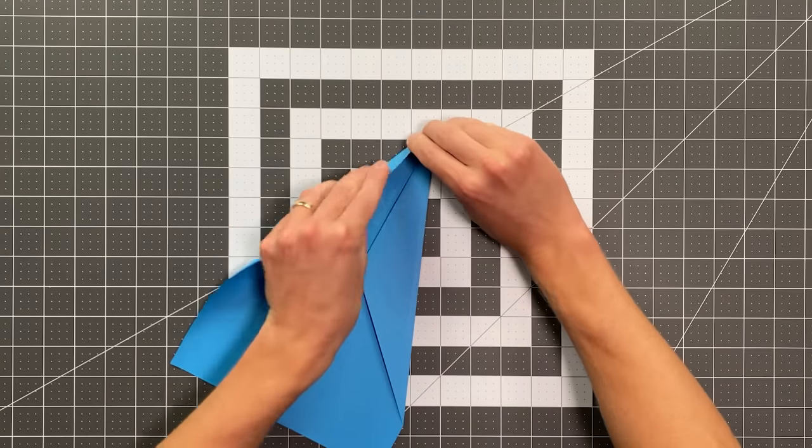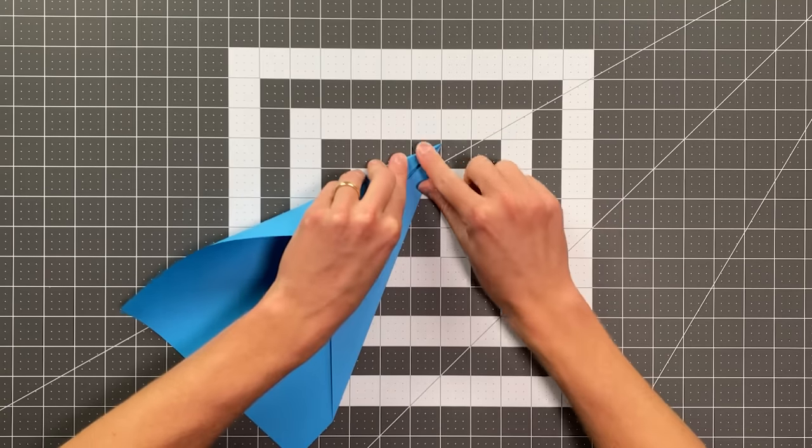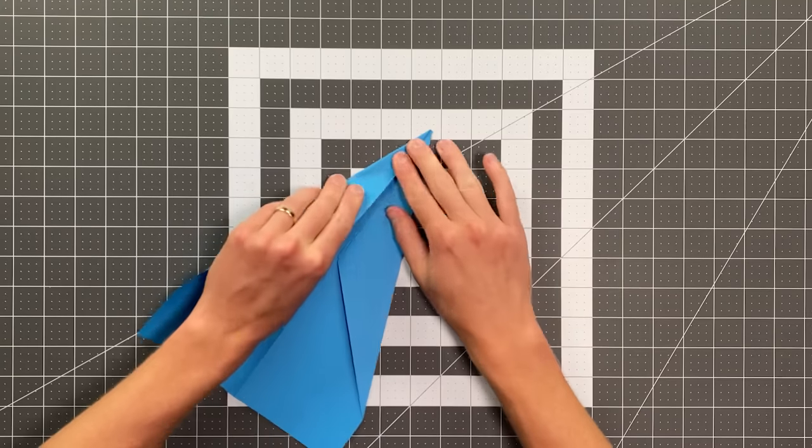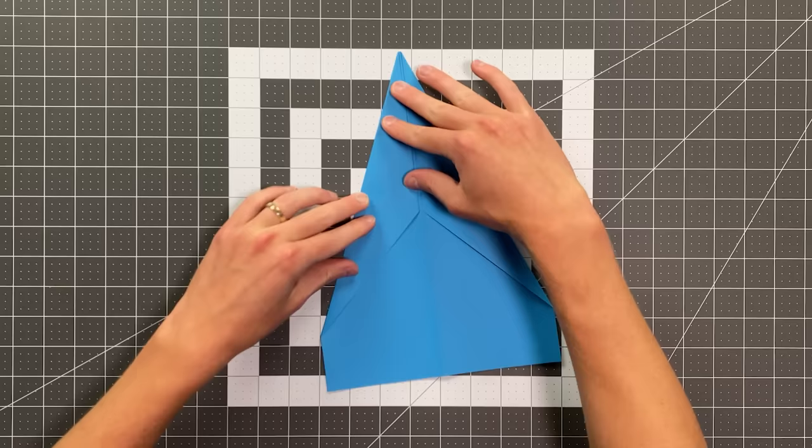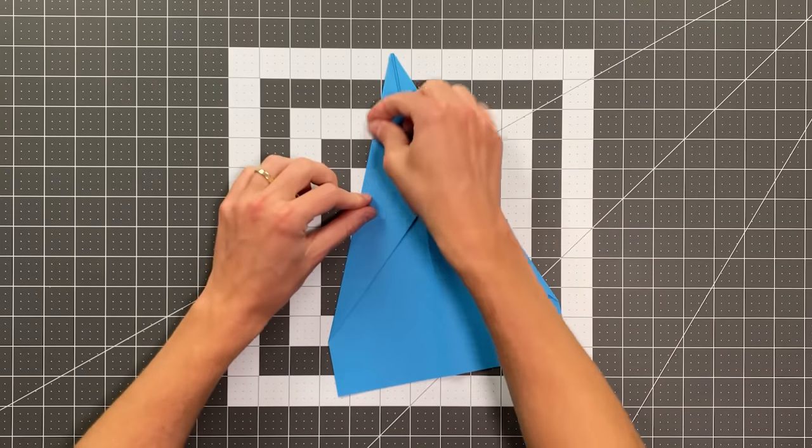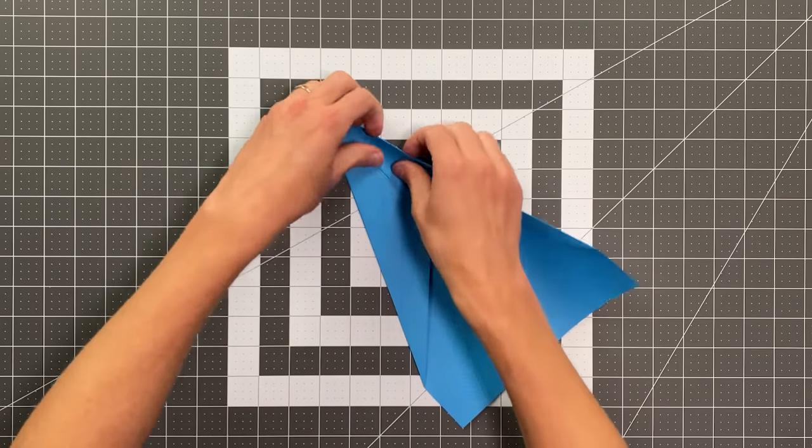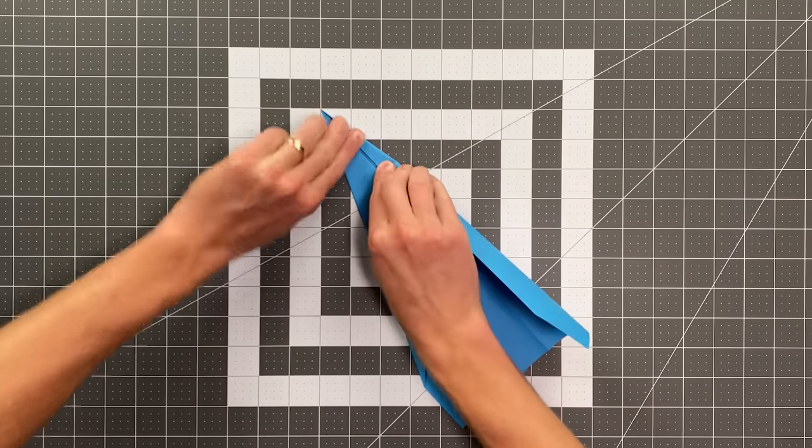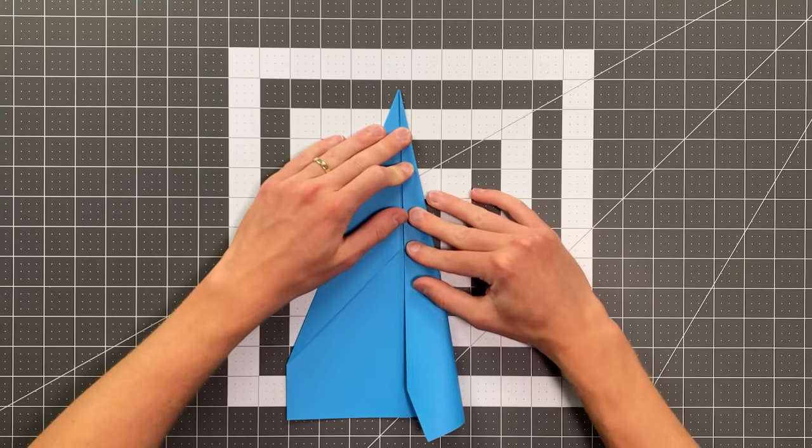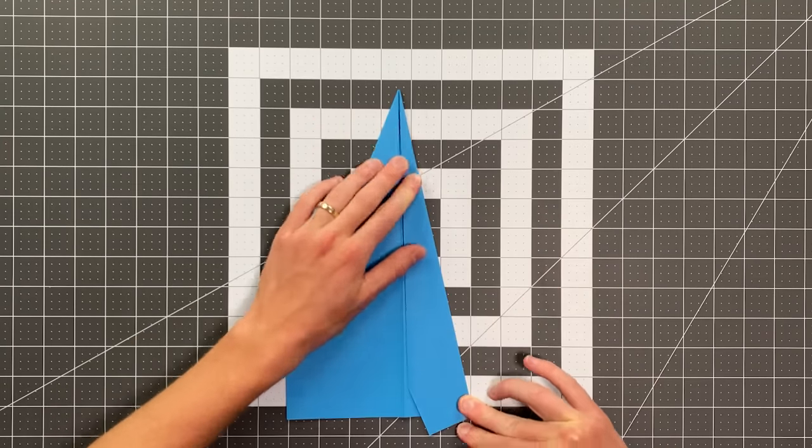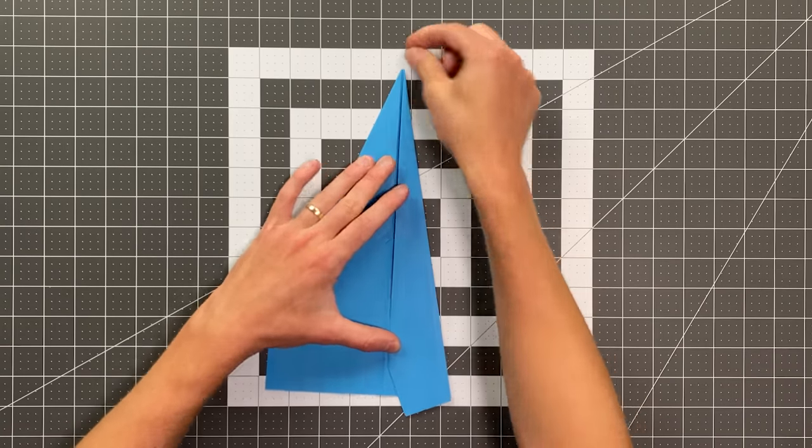We'll do the same thing on this side. And I bet that looks familiar. And we'll fold in one more time though, going into this edge again, not all the way to the center. Okay, do the same thing on the other side.